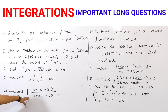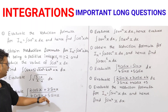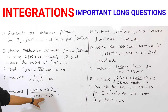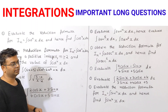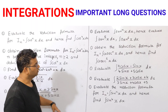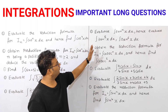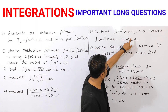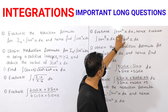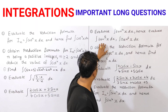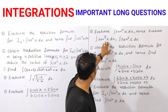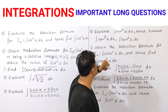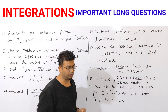Next, evaluate integration of (2 cos x plus 3 sin x) by (4 cos x plus 5 sin x). Next, evaluate integration of tan to the power of n of x dx, and find the values for tan to the power of 5 x and tan to the power of 6 x.